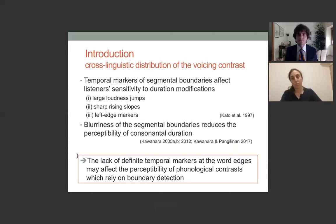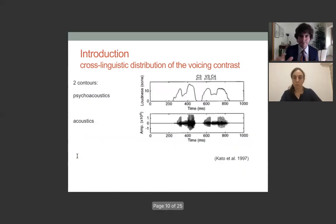Building on this work, we analyzed these temporal markers at the word edges as they may affect the perceptibility of phonological contrasts which rely on boundary detection, contrasts like the one under observation here. What you can see in this image is the two possible contours that can be extracted from a sound file. The one at the bottom is a purely physical acoustic one, its amplitude waveform. The one on top is a psychoacoustic one, loudness, that is the perceptual correlate of intensity.